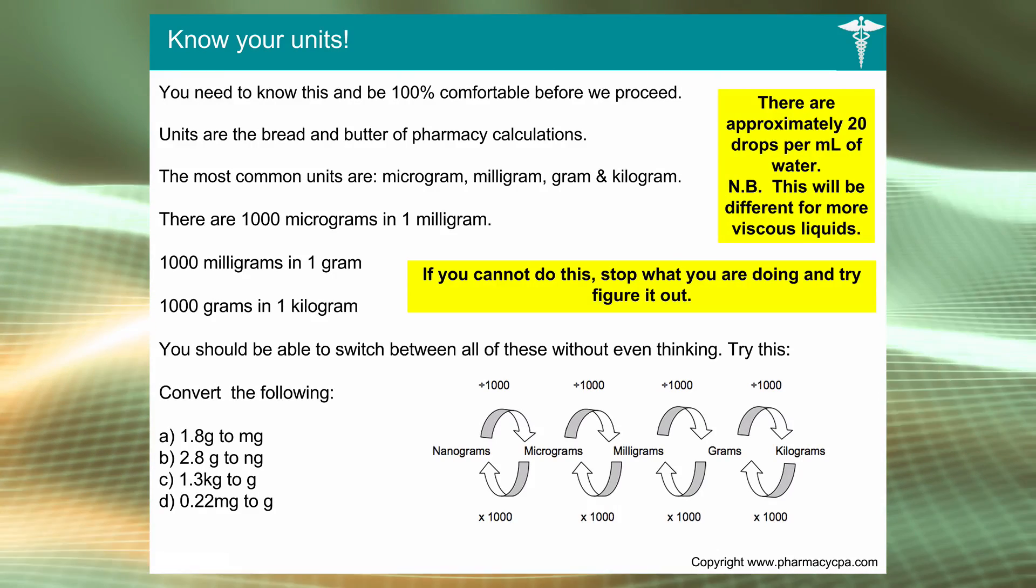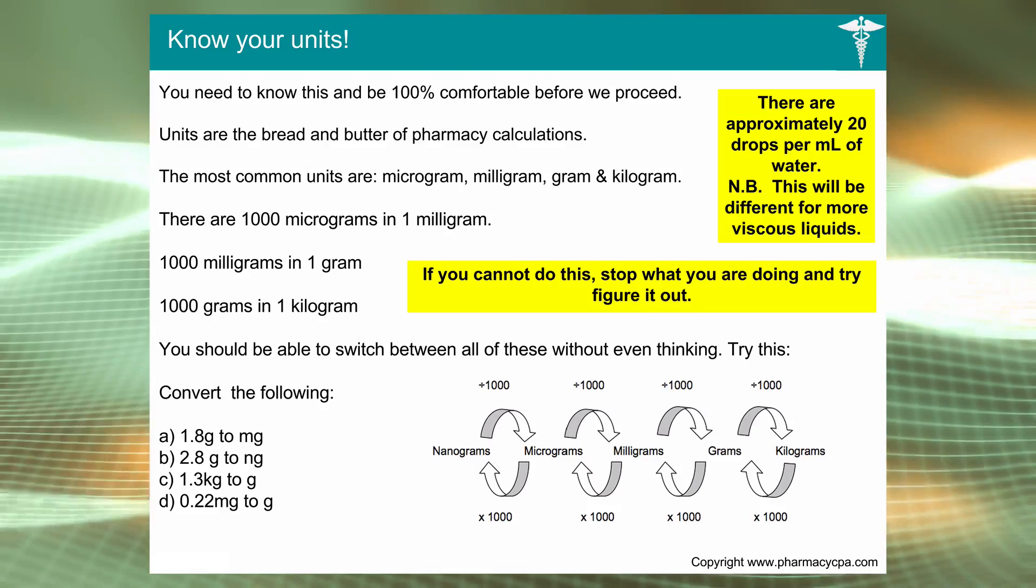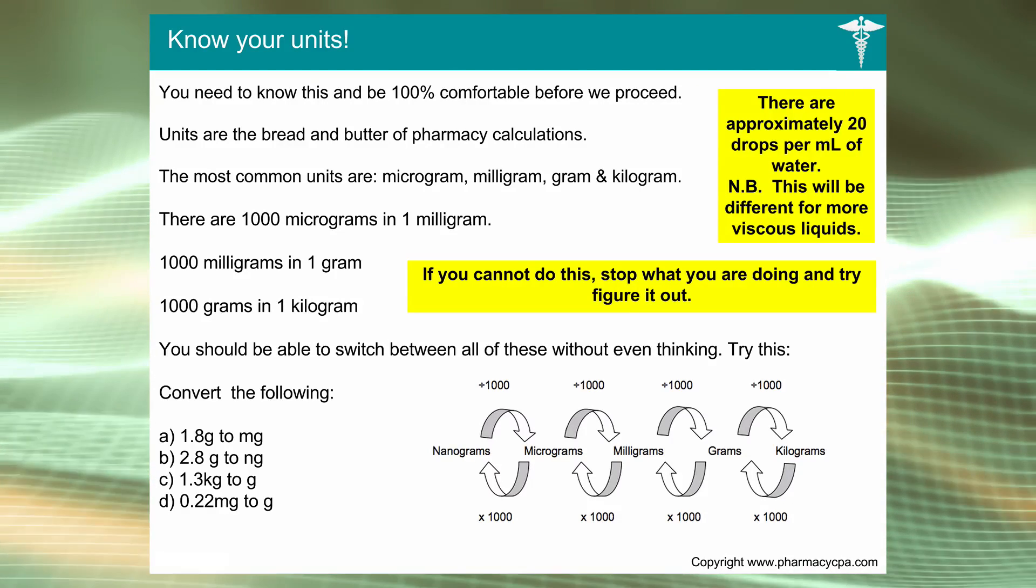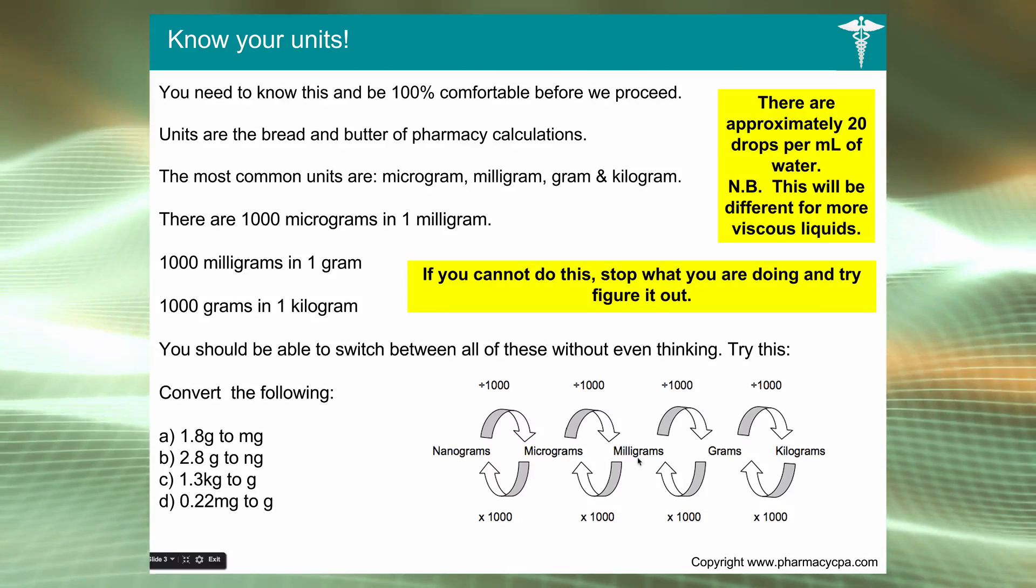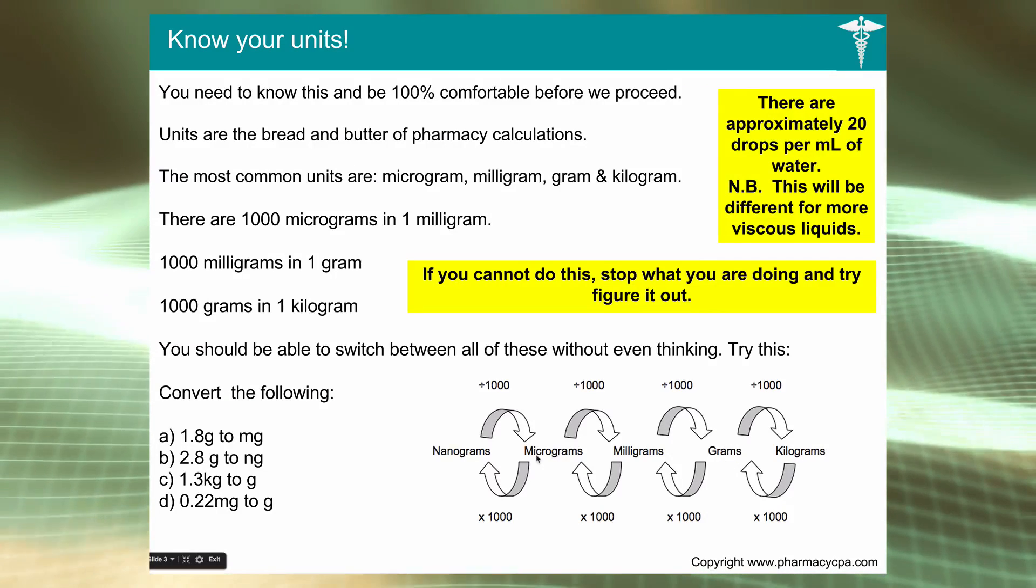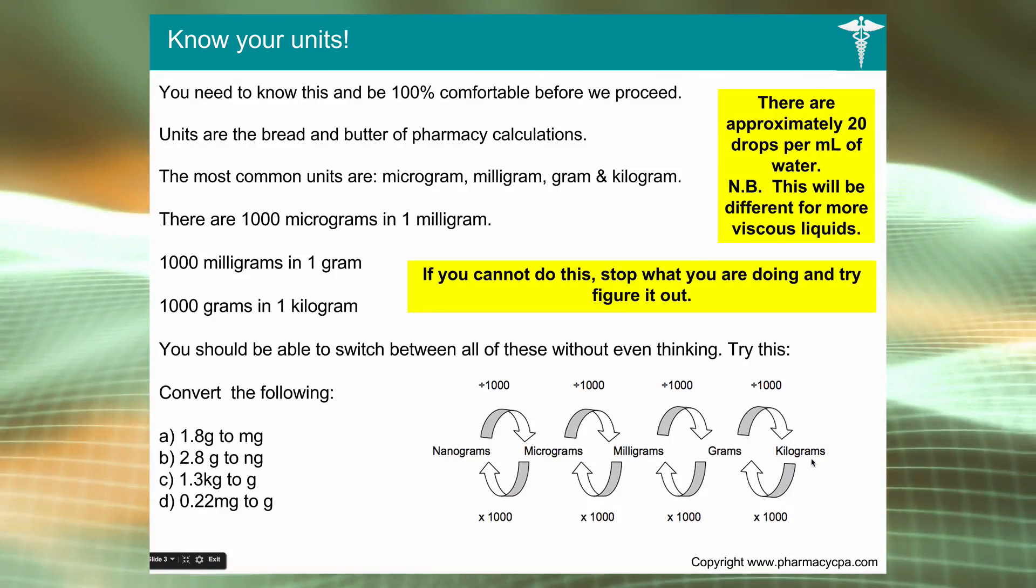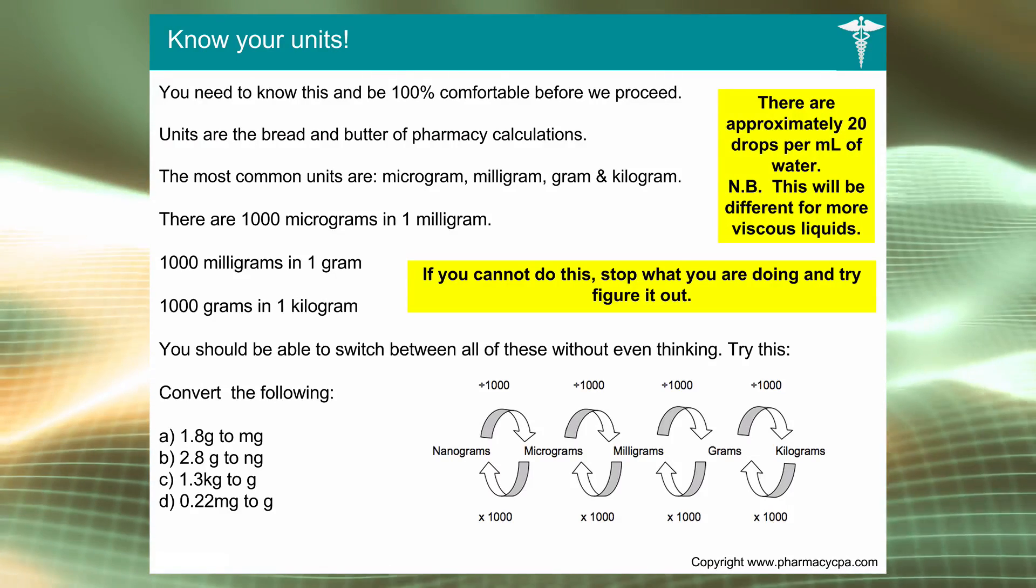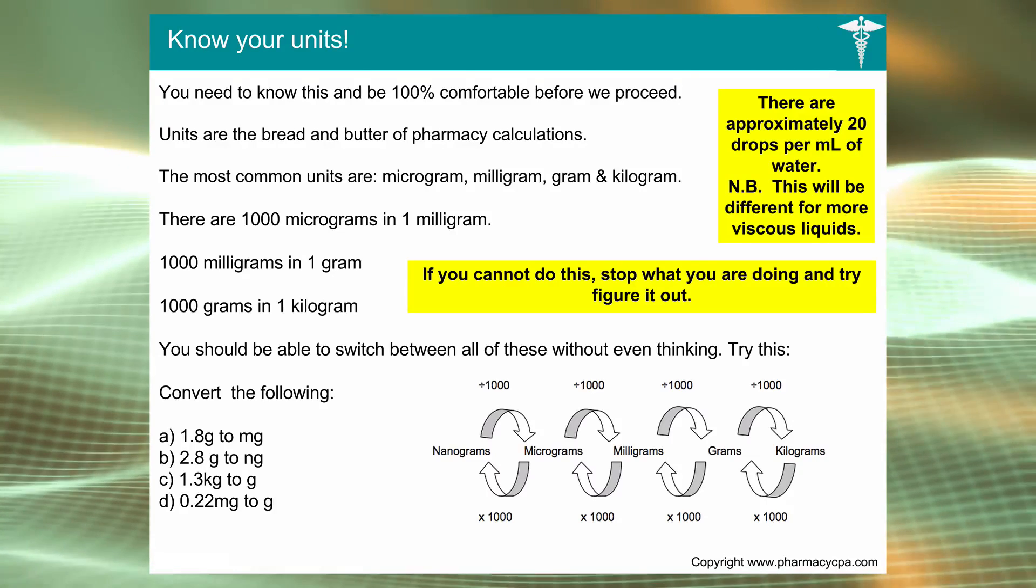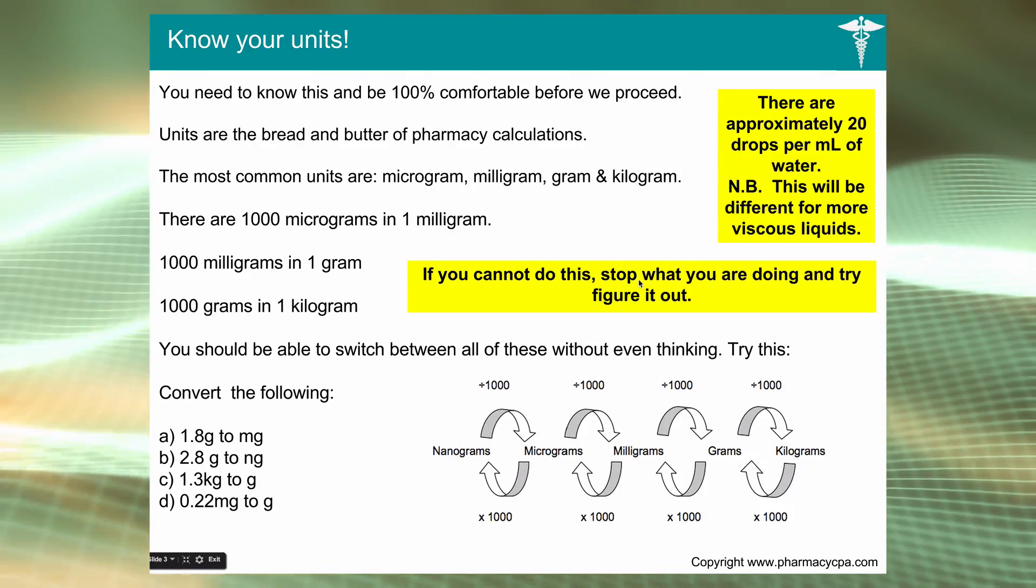If you've watched the initial video about pharmaceutical calculations, you'll remember that at the bottom of the pyramid are the units. You have to be comfortable with the base of the pyramid before you can move up to the next stage. Units really is the foundation. If you don't know how to very quickly convert between nanograms, micrograms, milligrams, grams, and kilograms, you're going to be in trouble. The main ones that you need to know are micrograms, milligrams, and grams. You just remember there's a thousand difference between each: nano, micro, milli, and grams.